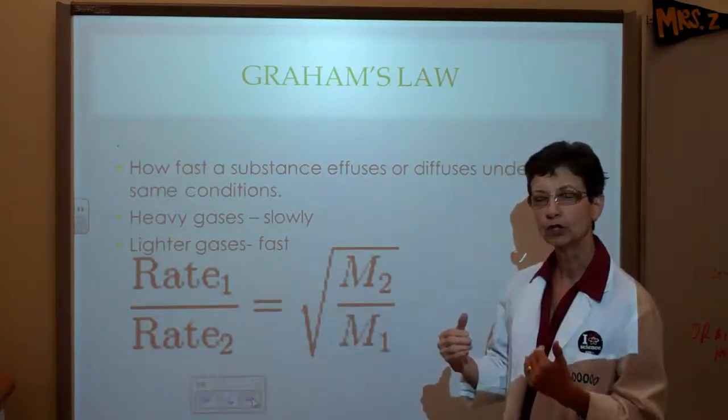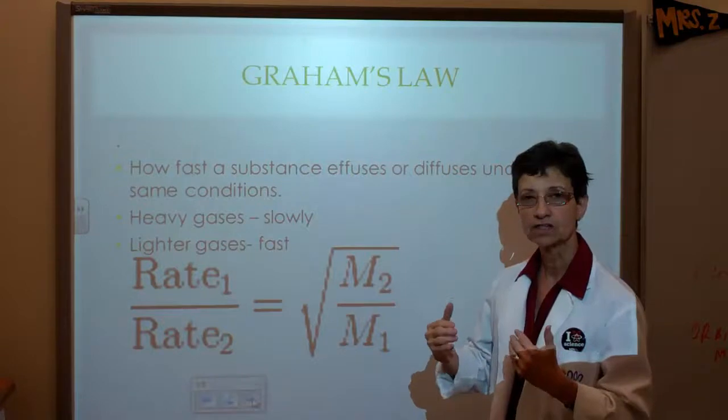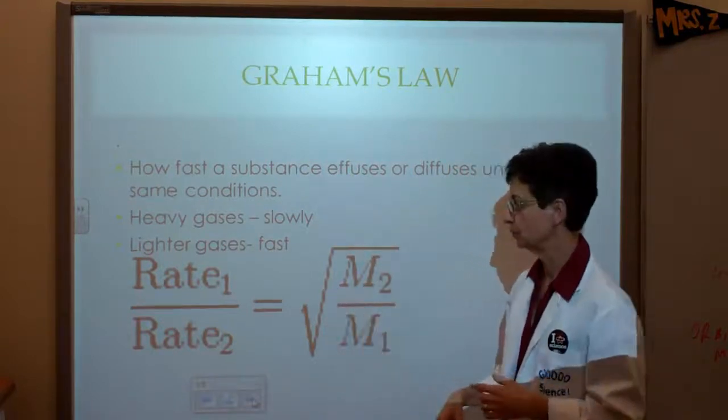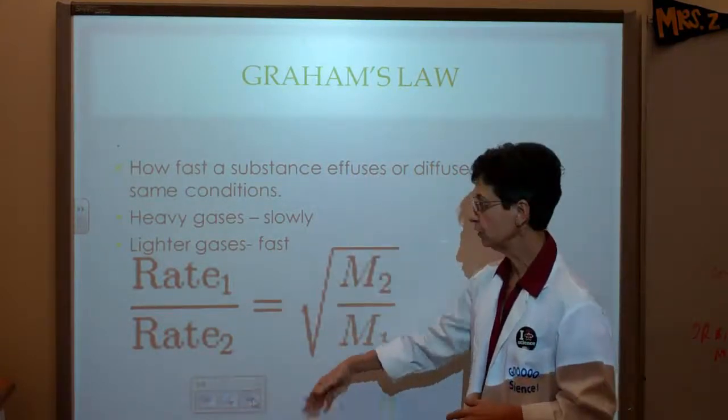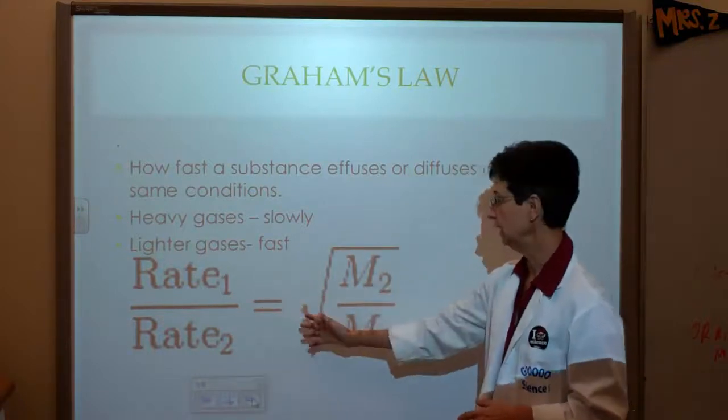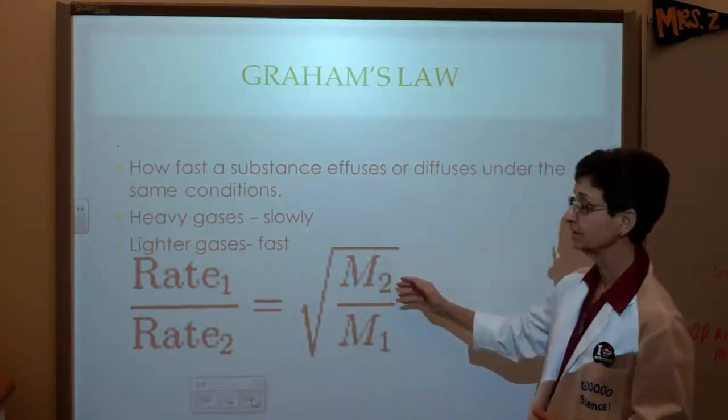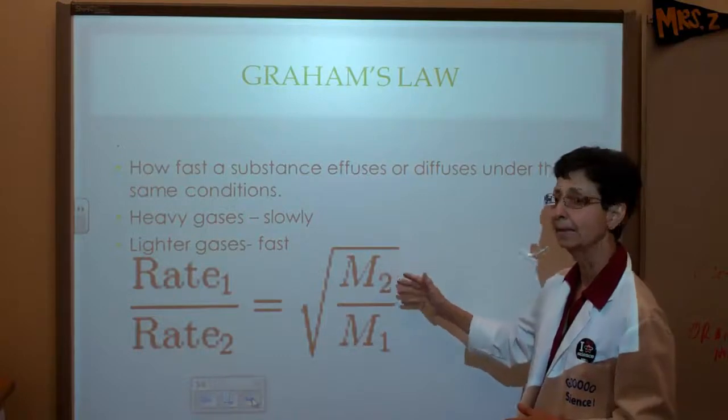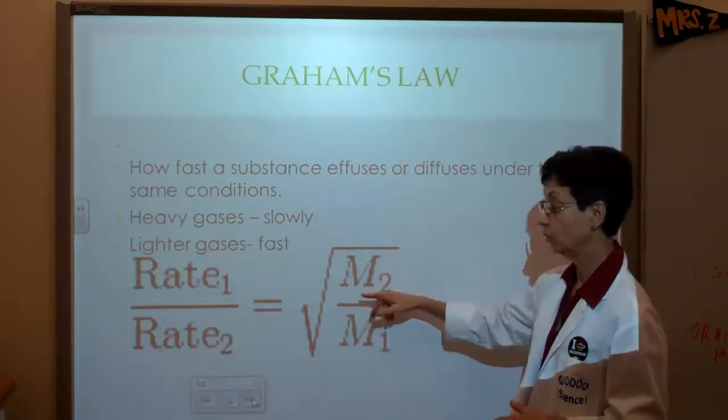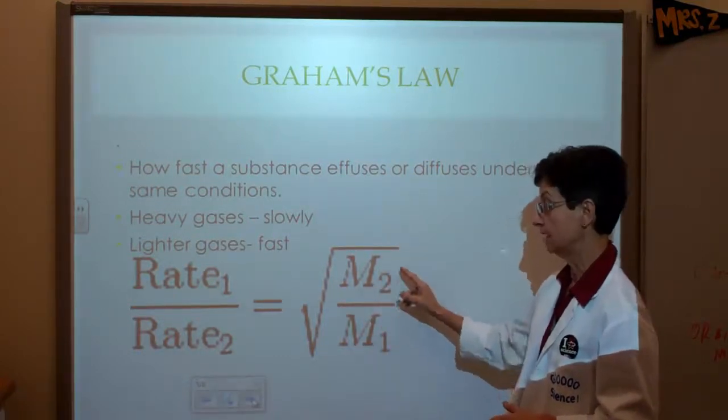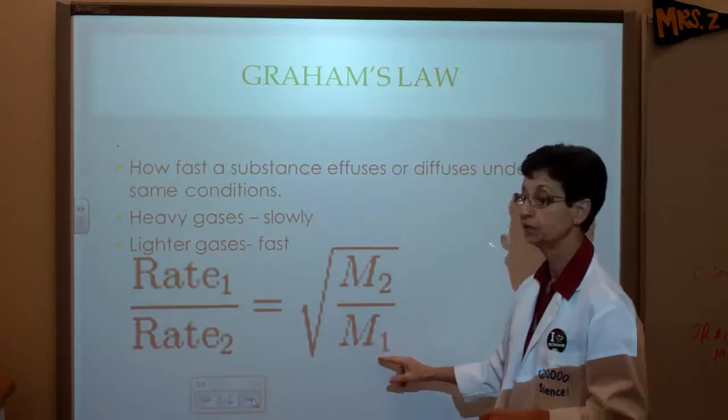So a lower molecular mass results in faster diffusion. The formula that we use is rate 1 over rate 2 equals the square root of the molar mass 2 over the square root of the molar mass 1.